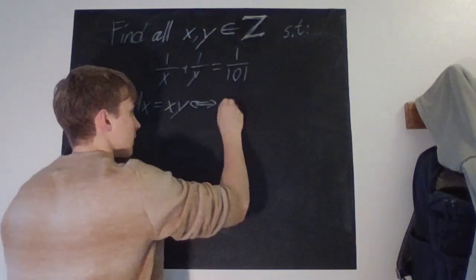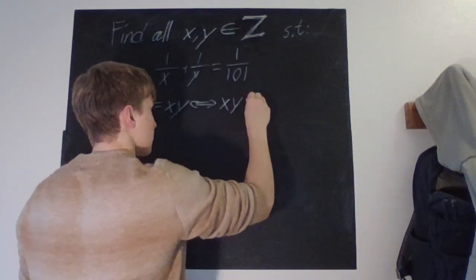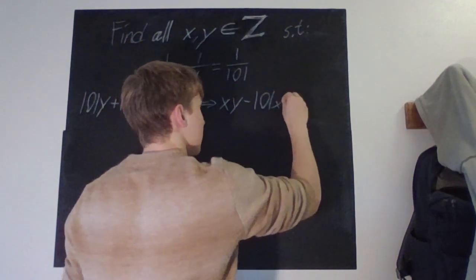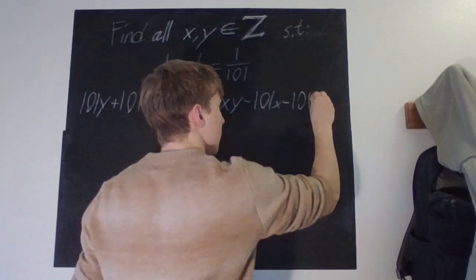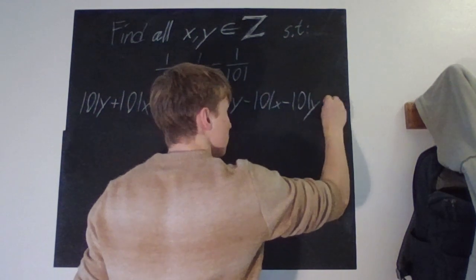We can do this however. I like it this way: xy - 101x - 101y = 0.